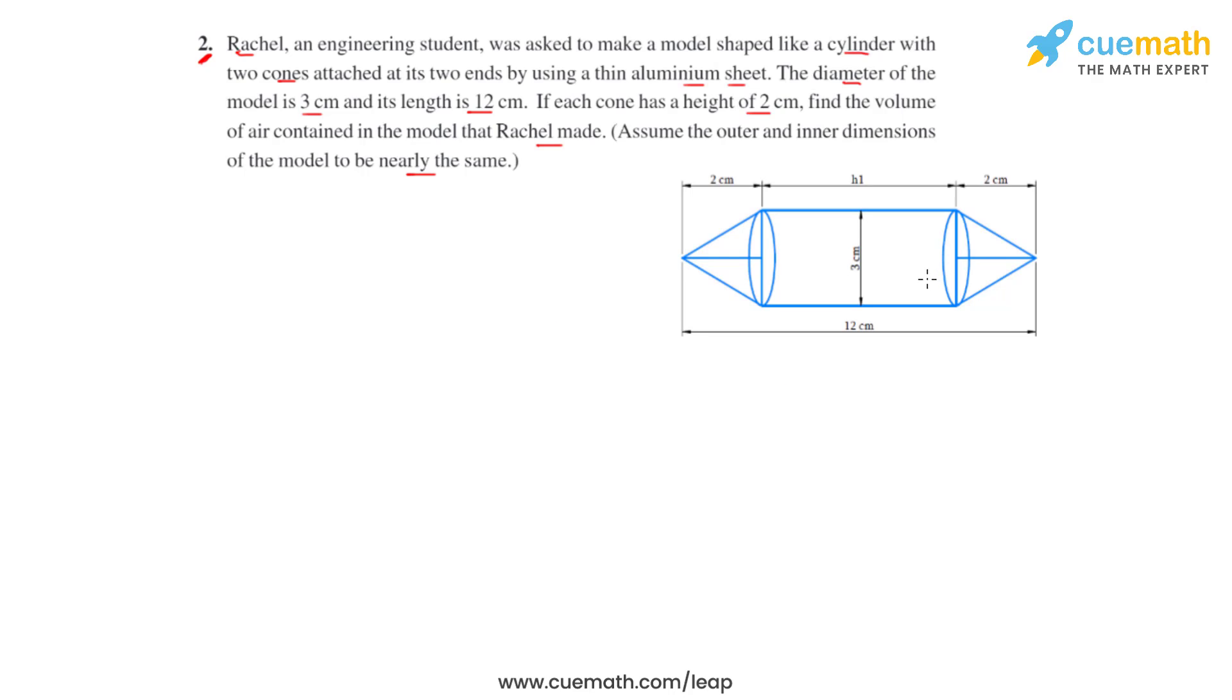This is how the model will look like. We have a cylinder at the center and at its two ends we have attached two cones. The total length of the model is 12 centimeters and the height of each cone is 2 centimeters. To get the height of the cylinder, which is marked as H1, we will subtract 2 plus 2 from 12. That is, we subtract 4 from 12, giving us H1 equal to 8 centimeters.